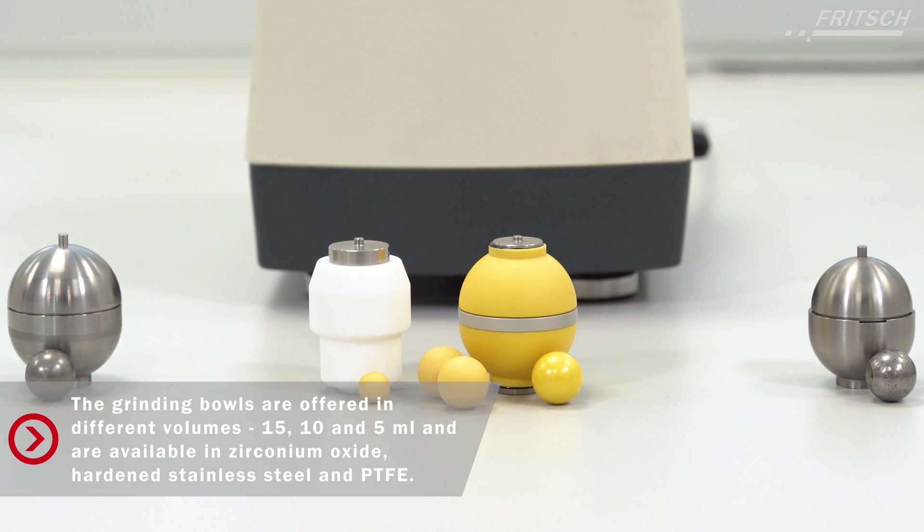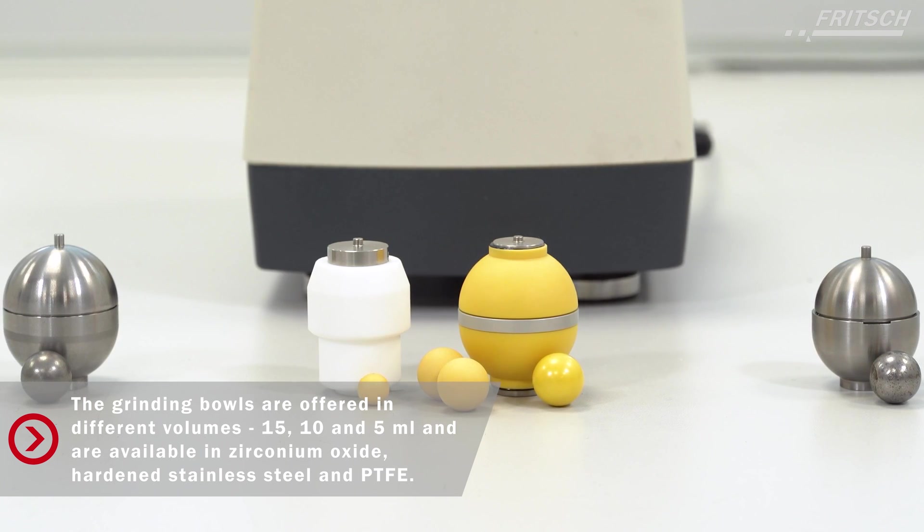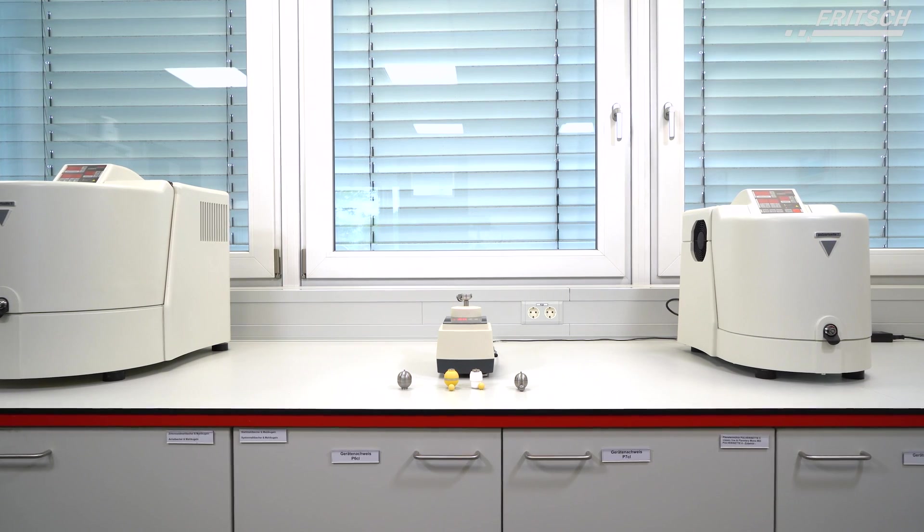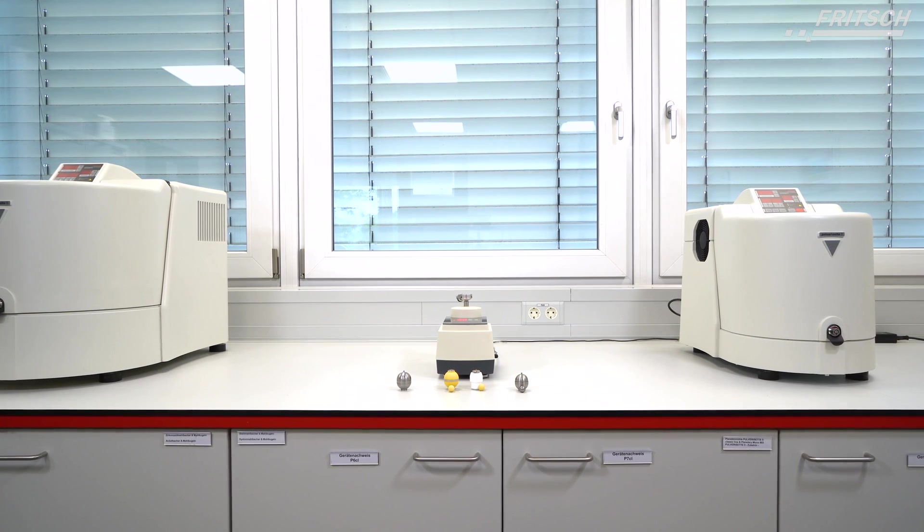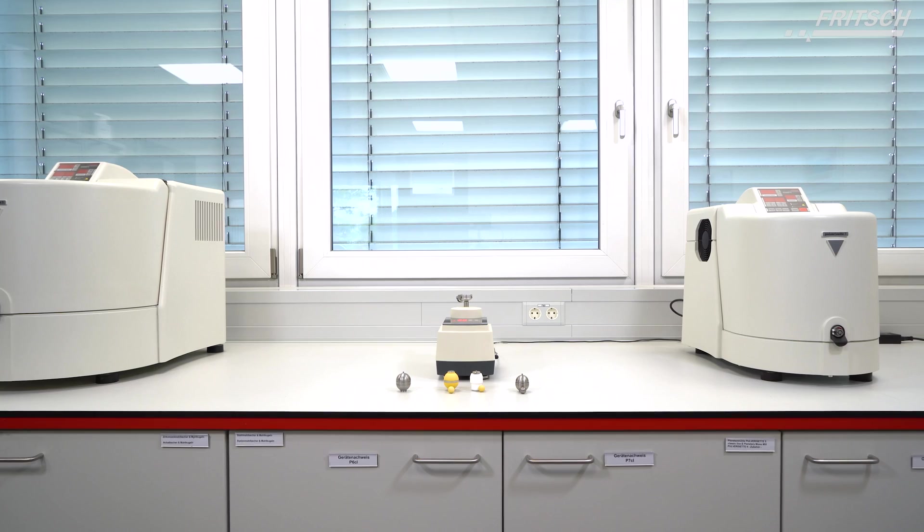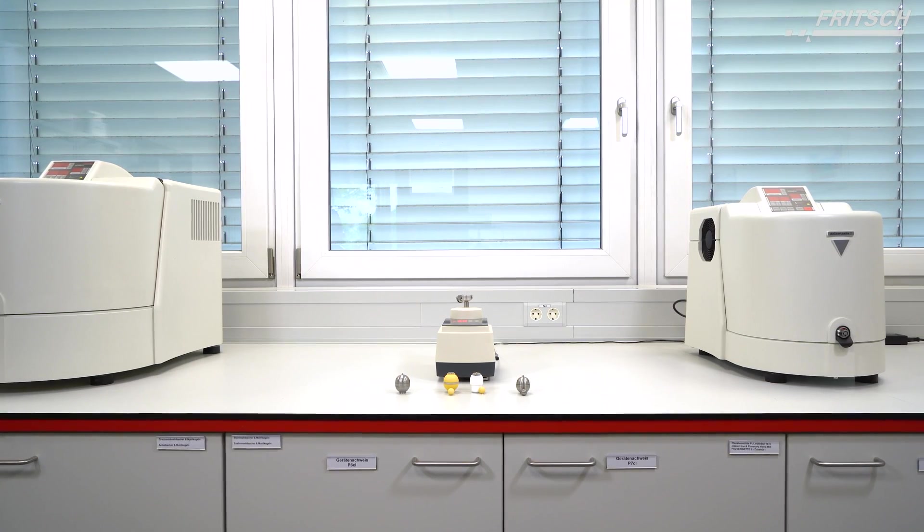We offer a selection of three different material types. The ultra-compact Fritsch MiniMill Pulverisette 23: the ideal assistance for fine comminution of smallest quantities.